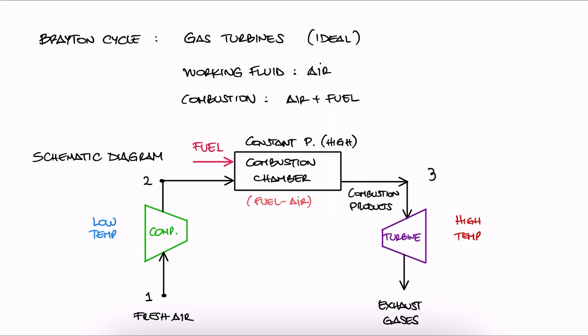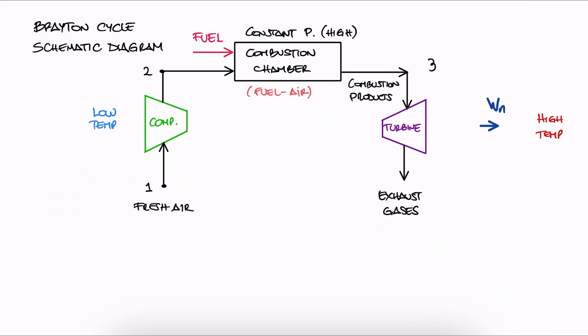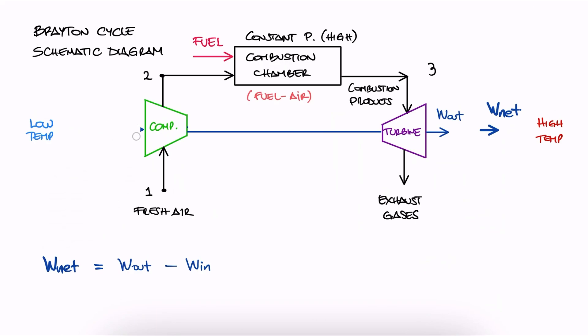Just like we've seen multiple times before, the net work will be the difference between the work being output by the turbine minus the work required to operate the compressor. We can also draw a connection between those two if the power output of the turbine is used to drive the compressor.